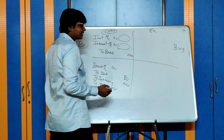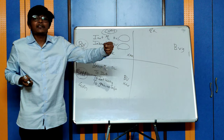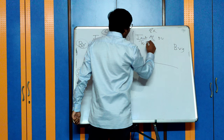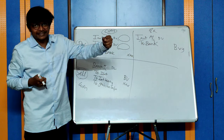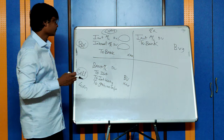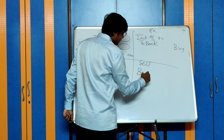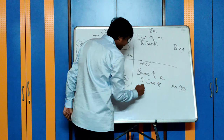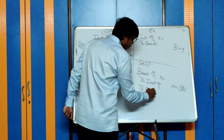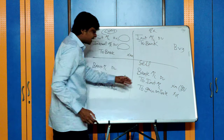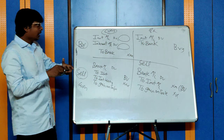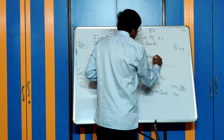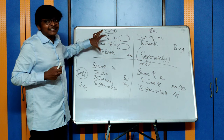For ex-interest purchase: you are not paying for the interest — only paying for the cost, and the party will separately compensate you for interest. Entry will be investment account debit to bank for the entire amount. For ex-interest sale: bank account debit to investment account at book value; the balance gain over and above book value is gain on sale of investment. If it is a loss, it will come on the debit side. For ex-interest, interest will be accounted, received, or paid separately between the parties.